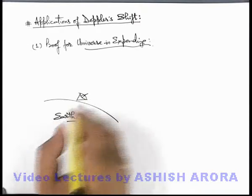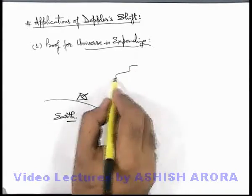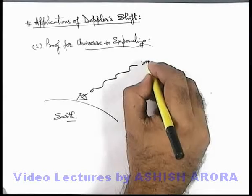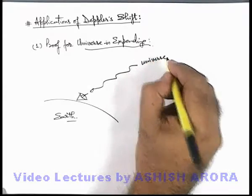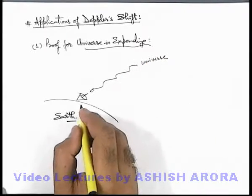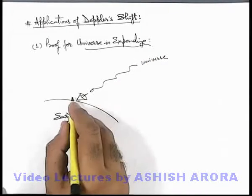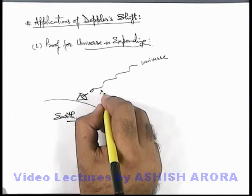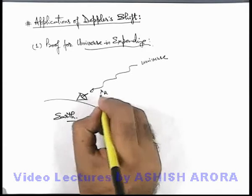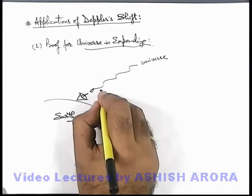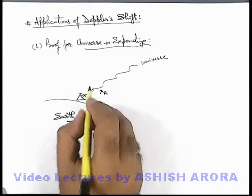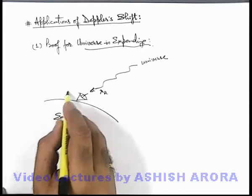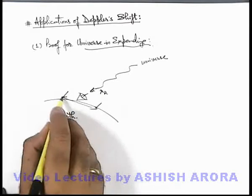Say if there is a radar which is receiving some waves which are coming from the universe, and when the wave is approaching to earth it is having a wavelength lambda r — this is the receiving wavelength. And when this wavelength is compared with the visible spectrum.